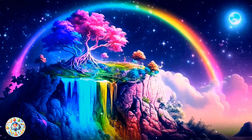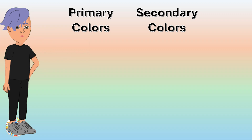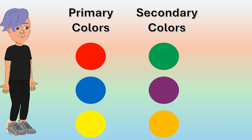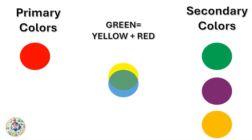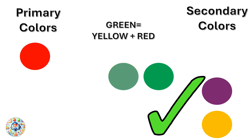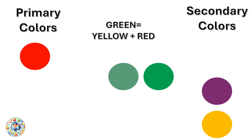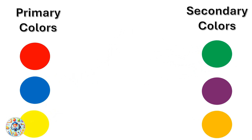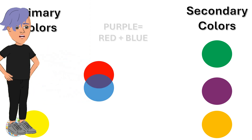Now let's try to make the secondary colors by mixing the primary colors. To make green, we need to mix yellow and blue. To make purple, we need to mix red and blue.